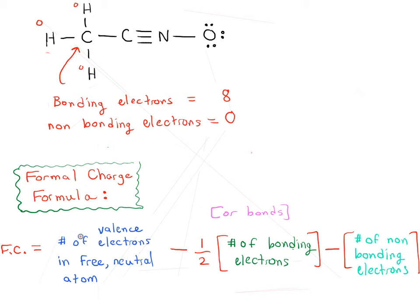And if we figure out the formal charge for this, we've got the number of valence electrons in a free neutral atom of carbon. Well, that should be four, right? Four. It's in group four. One half times the number of bonding electrons, that's one half times eight, that gives an answer of four. And there's no non-bonding electrons. So four minus four minus zero. Well, that's zero. So it's also neutral.